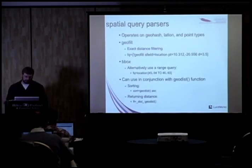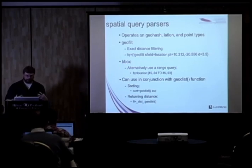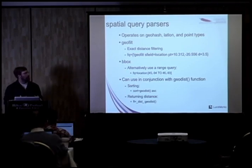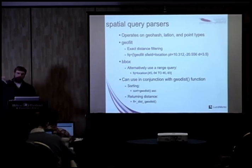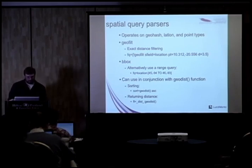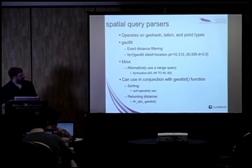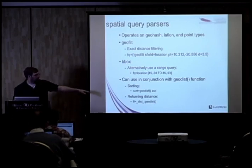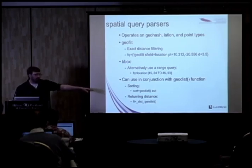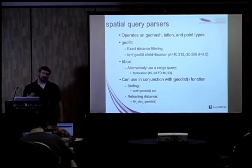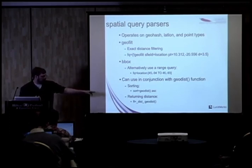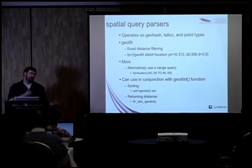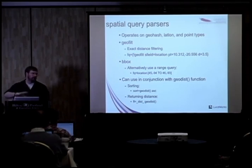There are a number of spatial query parsers, supporting geohash, lat/long, and point-type querying. You can filter on exact distance, do bounding box and radial type searches, and range queries. The range query syntax lets you specify lat/long to lat/long to come up with a bounding box for geohash. In conjunction with geo queries, you can sort by a function query or return the distance in results — a new feature in Solr 4 using pseudo fields, where you say underscore-dist-underscore colon geodist to get a distance value back in each document's response.